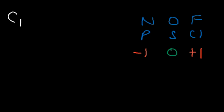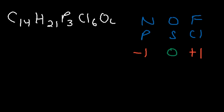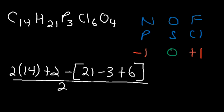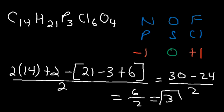Here's another one: C14H21P3Cl6O4. We have 14 carbon atoms so N = 14, plus 2. There are 21 hydrogen atoms. For phosphorus, we take away 1 per atom, so subtract 3. We have 6 chlorine atoms, so add 6. For oxygen, it has no effect on the IHD value. 2×14 = 28, plus 2 = 30. 21 minus 3 = 18, plus 6 = 24. 30 minus 24 = 6. 6 divided by 2 = 3. So the IHD value is 3.